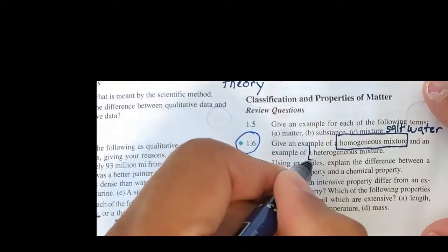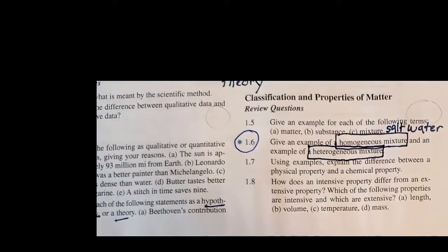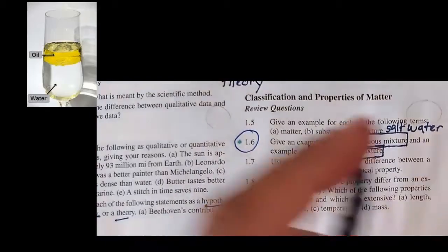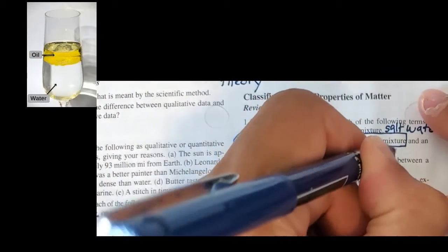Heterogeneous mixtures are two or more entities, but they are clearly separate from one another. They partition. You can see that. The best example of this is oil and water.